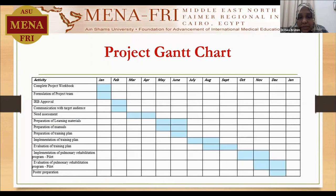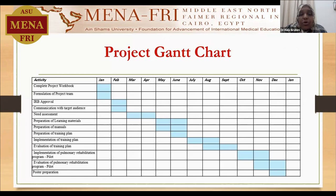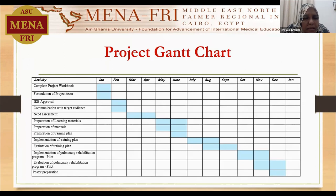This is the Project Gantt Chart, which describes the execution of the project by time. I started by completing and formulating the project team, done in January. In February, I did my IRB approval and communication with the target audience.